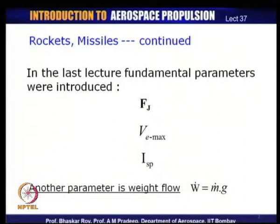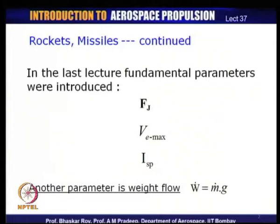We are talking about the rocket engines. Some of the parameters introduced in the last class — we shall continue with those introductions: the thrust or jet thrust F_j, the exhaust velocity, the maximum exhaust velocity possible in vacuum when the rocket operates in a vacuum atmosphere, and the fundamental parameter ISP, called specific impulse. These are the fundamental parameters of any rocket engine — whether rockets, missiles, or spacecrafts — all must be specified with these parameters to begin with.